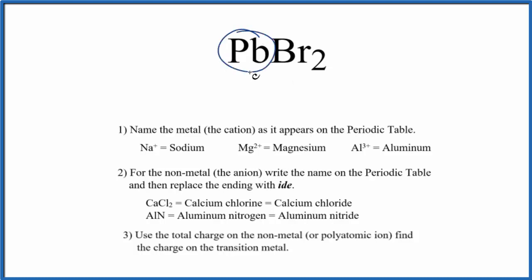Specifically, this lead is a transition metal. So we have an ionic compound with a transition metal. We're going to use these rules here to write the name for PbBr2.